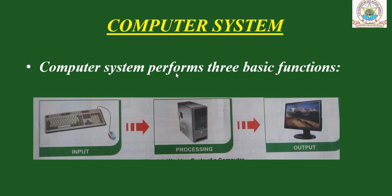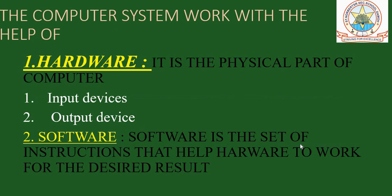A computer system performs three basic functions: first is input, second is processing, and third is output. Now our computer system works with the help of hardware and software. Hardware is a physical part of the computer and it is divided into two parts: input devices and output devices. Software is a set of instructions that help hardware to work for the desired result.